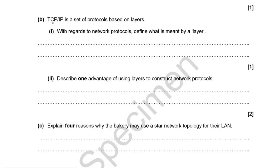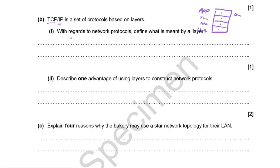TCP/IP is a set of protocols based on layers. TCP is an individual protocol, as is IP. In the four-layer model (also described as five or seven layers), different protocols operate at different layers. Each layer represents a single part of the communication process — from the application layer at the top, through transport and network, down to the link/hardware layer.